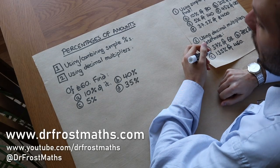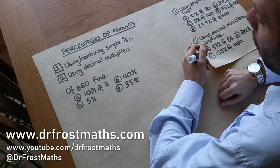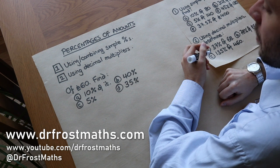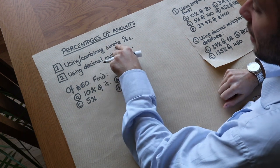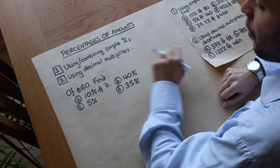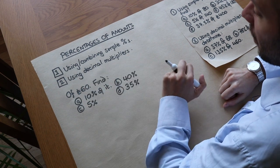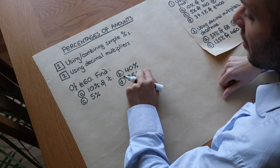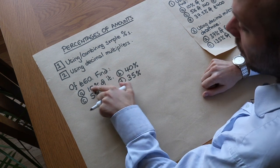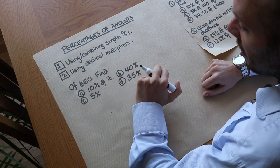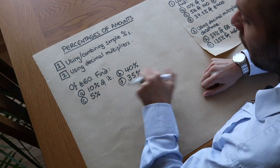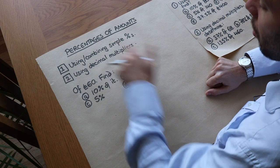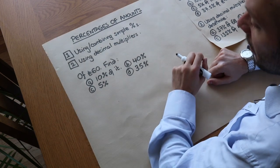Hello and welcome to this video on percentages of amounts. There are two ways we'll explore how to find a percentage of an amount. We're going to use and combine simple percentages, and we're also going to use decimal multipliers which we explored in another video. So let's take this example of £60 — we want to find 10%, 40%, 5%, and 35%, using this first approach of combining simple percentages.